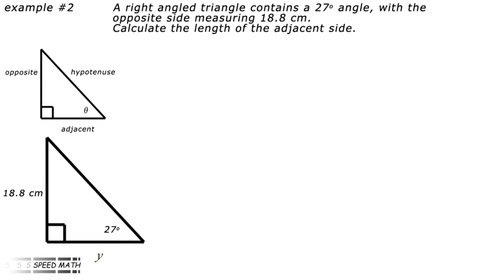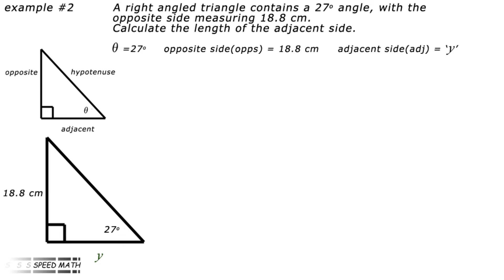Now for the second type: you are given the angle and the opposite side and are required to work out the adjacent side. Example 2: a right-angle triangle contains a 27 degree angle with the opposite side measuring 18.8 centimeters. Calculate the length of the adjacent side. Writing this out: theta equals 27 degrees, opposite side equals 18.8 cm, adjacent side equals Y (unknown), answer to two decimal places. Rewrite the tangent ratio: tan theta over 1 equals opposite divided by adjacent.